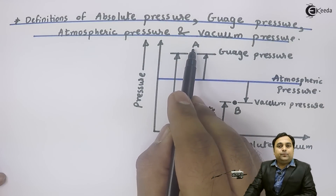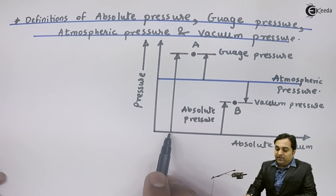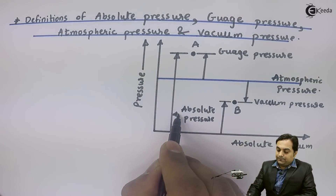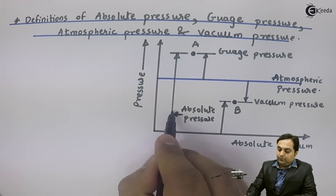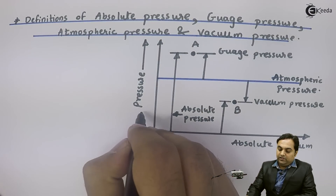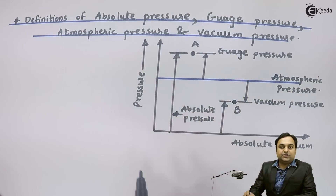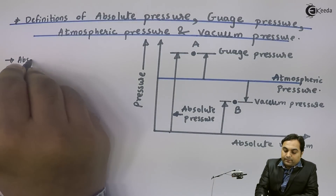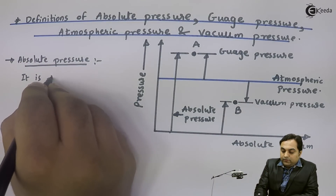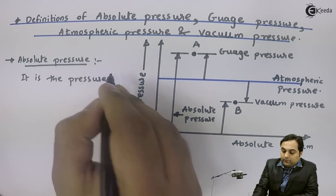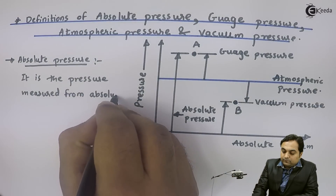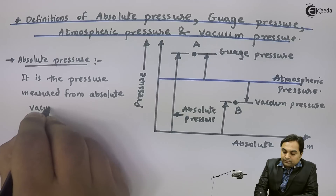Suppose I am taking point A. At point A, if I am marking the pressure from absolute vacuum, that would be called absolute pressure. As we can see in this diagram, from the absolute vacuum up to point A, if I am reading the pressure value, that becomes my absolute pressure, because the vertical axis indicates pressure. So absolute pressure is the pressure measured from absolute vacuum.